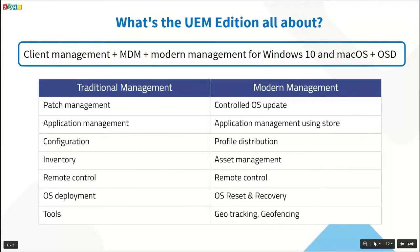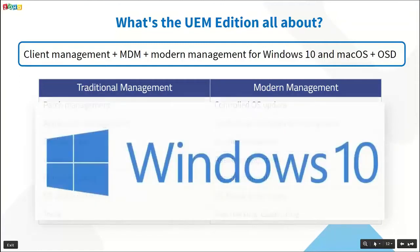All modern operating systems support modern management. Features include geo tracking, geo fencing, managing store applications, profile distribution to enforce restrictions, and operating system reset and recovery. When we say modern operating system, a popular example is Windows 10. Windows 10 is a classic example where you can manage both traditional and modern management.